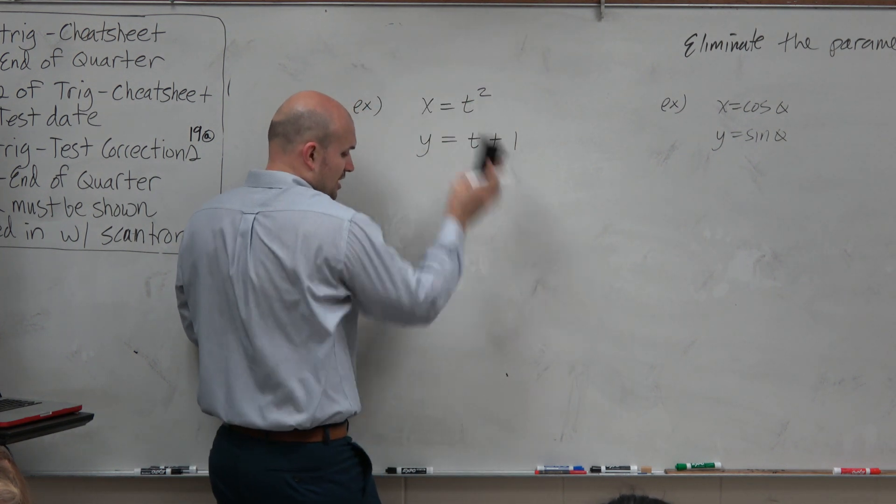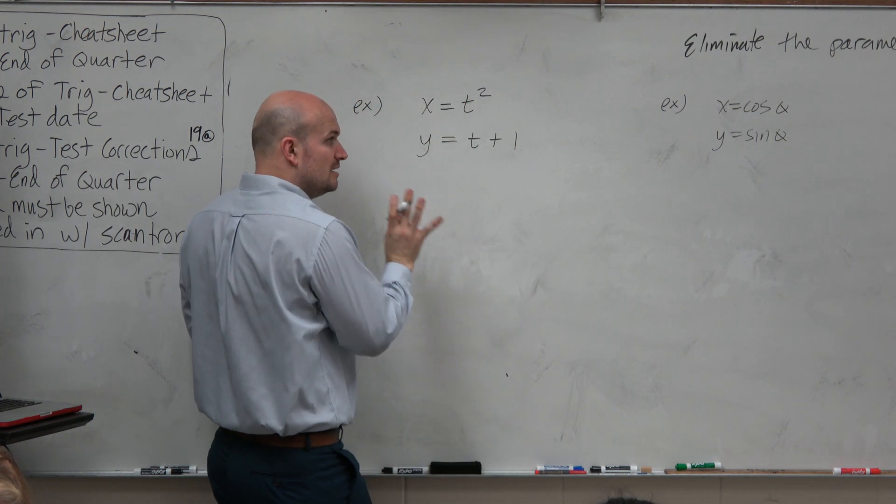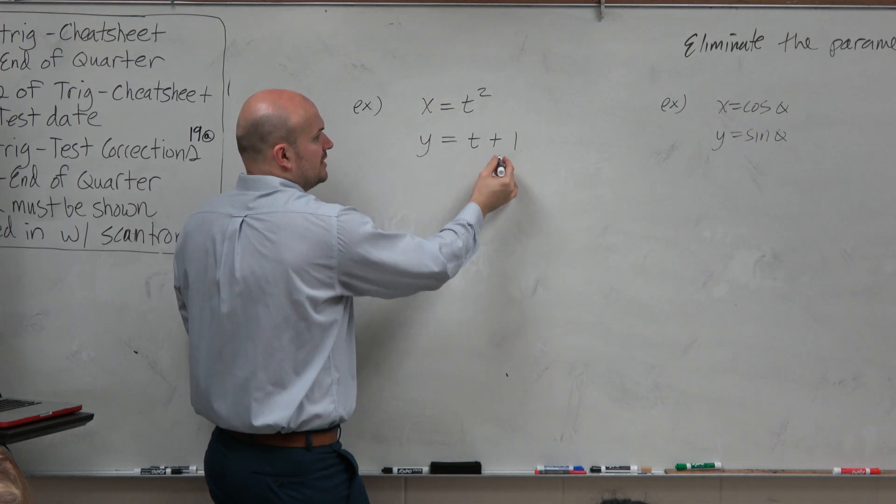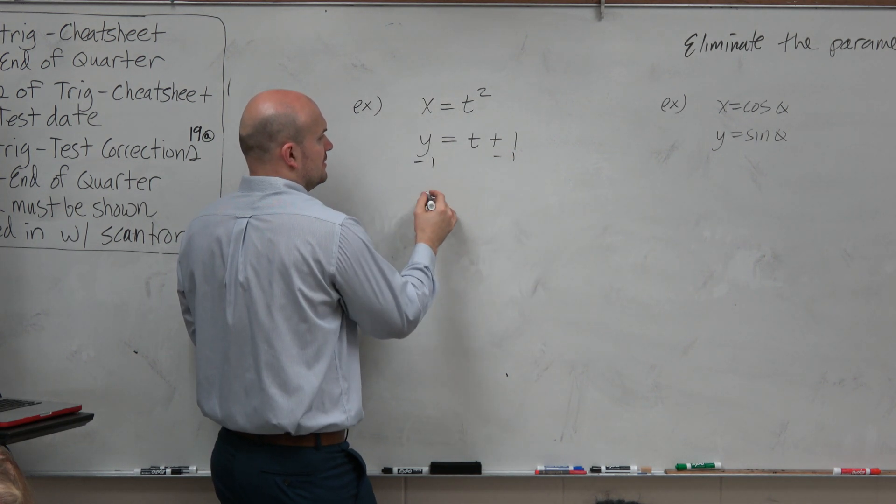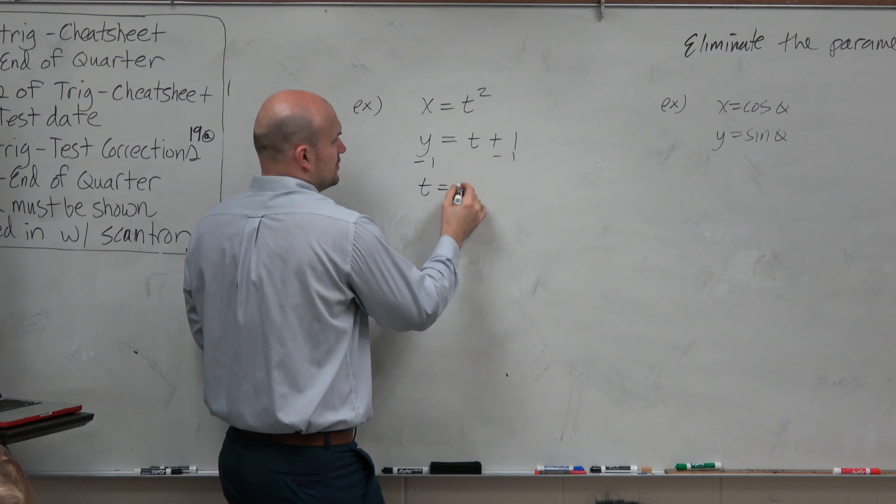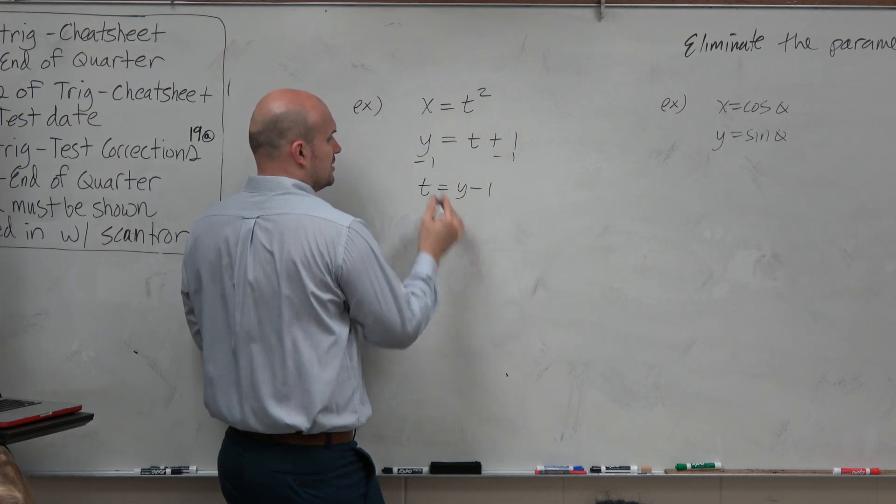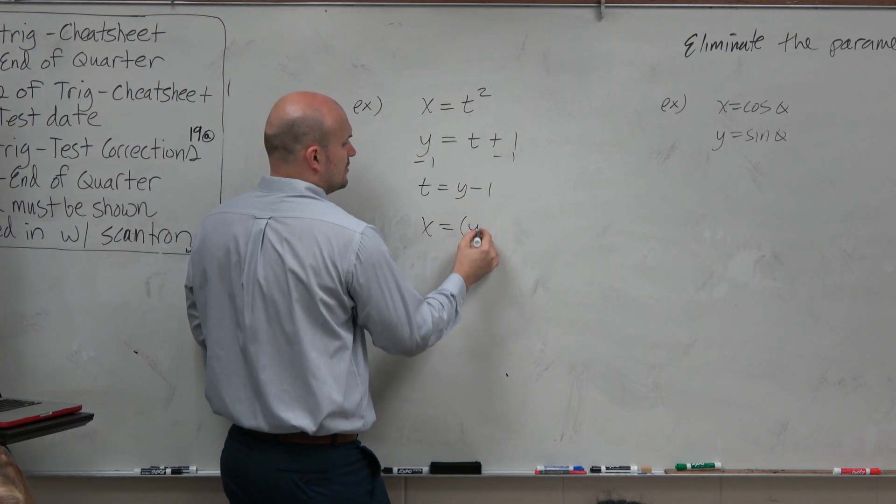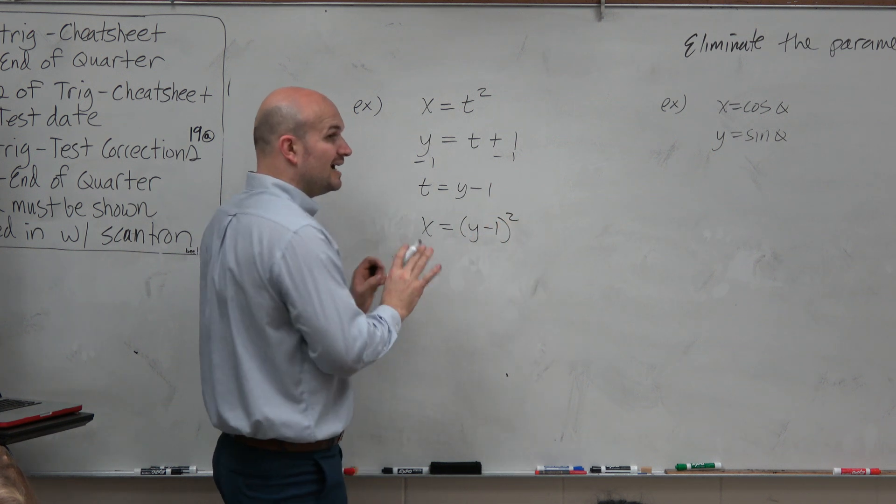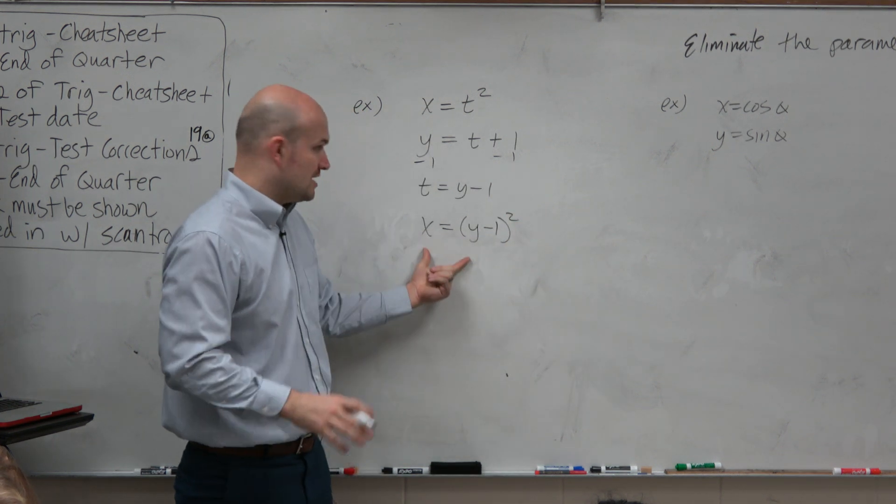So instead of solving for t and the x, which is preferred, but not always what you want to do. If we solve for this over here, we would have t is equal to y minus 1. Plug that into there. We get x equals y minus 1 squared. Again, if the variables were switched around, what would this be?